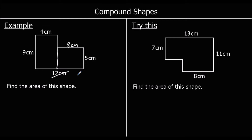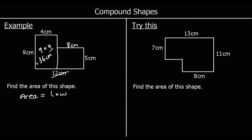Now we've got two rectangles and we know their length and width. The area of a rectangle is length times width. For our four by nine rectangle, we do nine times four, which is 36. We measure area in squares, so it's 36 centimetres squared.